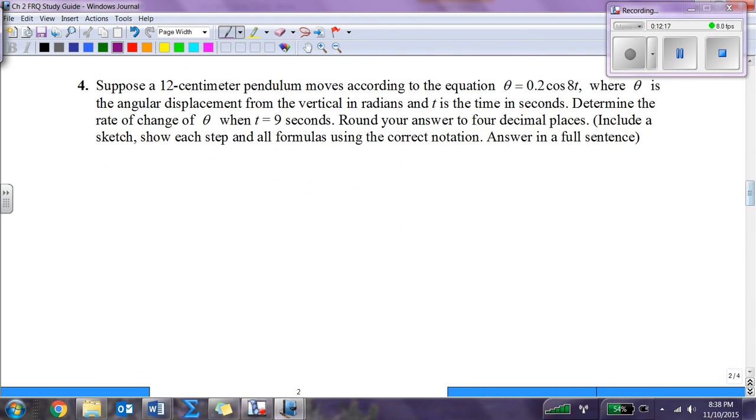Number 4. Suppose a 12 centimeter pendulum moves according to the equation z with theta. So we've got our pendulum with a weight at the end swinging both directions. This angle is our theta. We know that theta equals 0.2 cosine 8t, where theta is the angular displacement and t is in seconds. Determine the rate of change of theta.